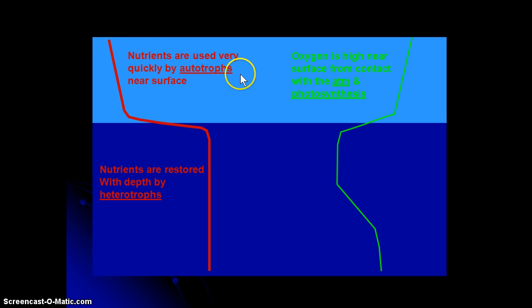But also what do the autotrophs do? They're doing photosynthesis. And what is one of the products of photosynthesis? Oxygen. So oxygen is always very high in the surface. And you see, as we get deeper and deeper, we get less and less photosynthesis as we get further and further away from the light.